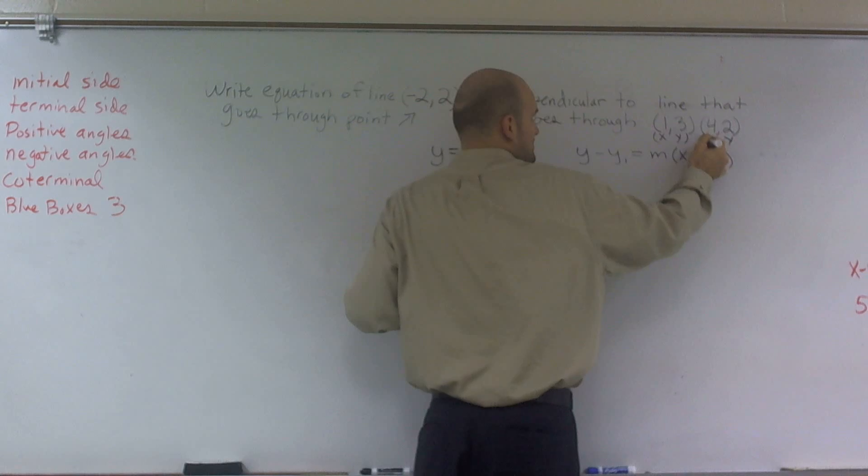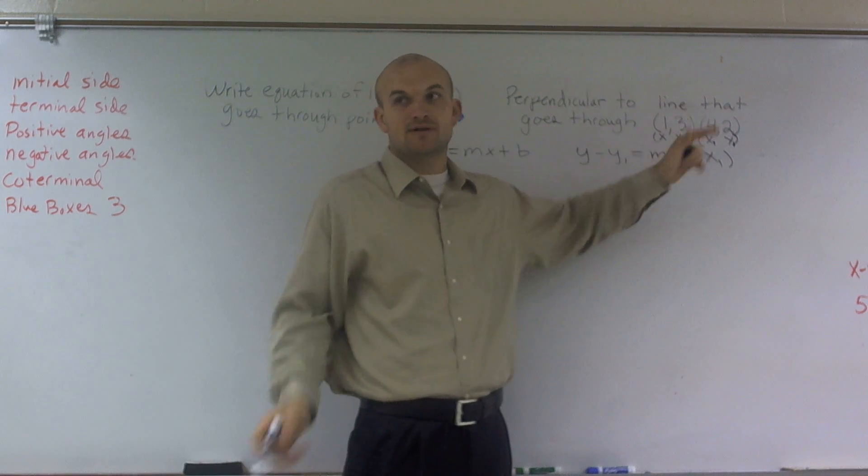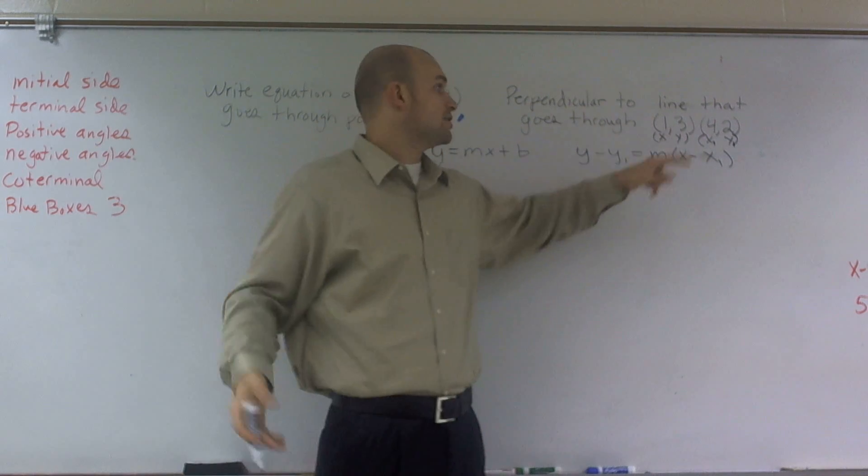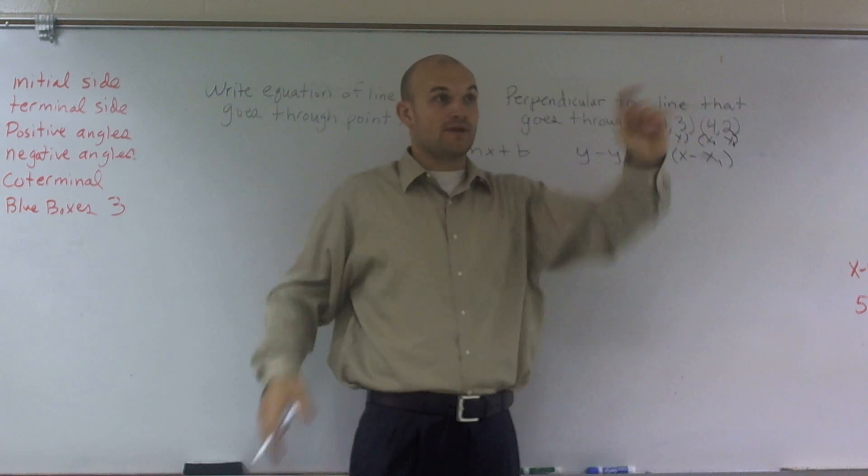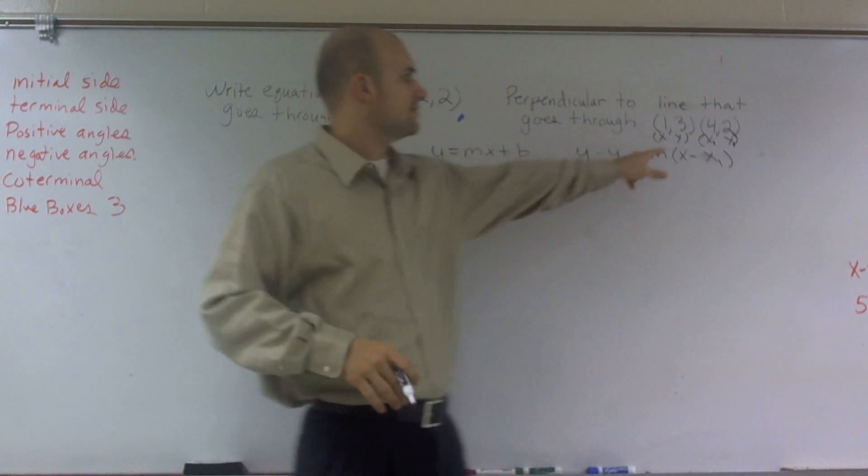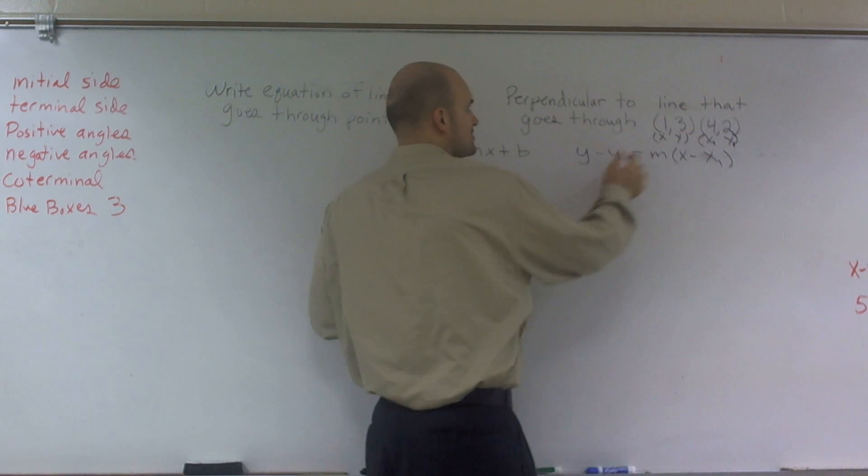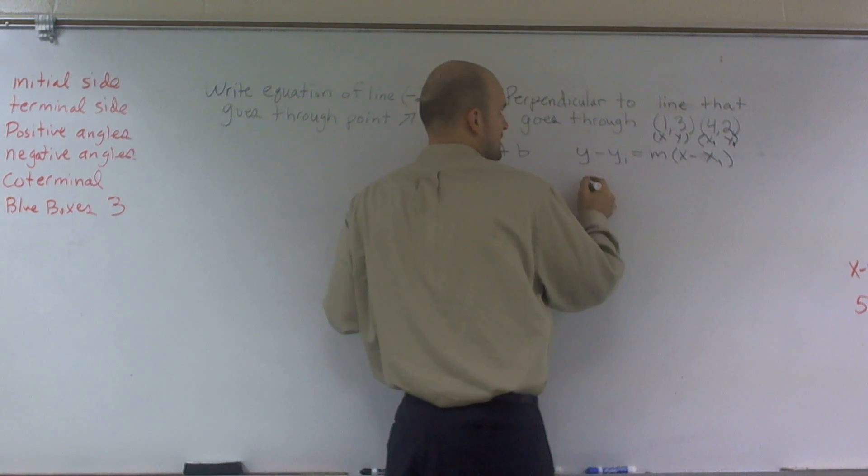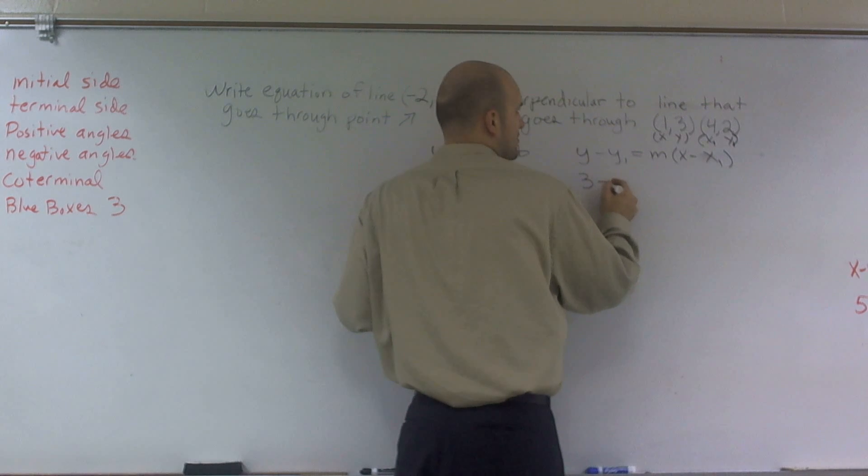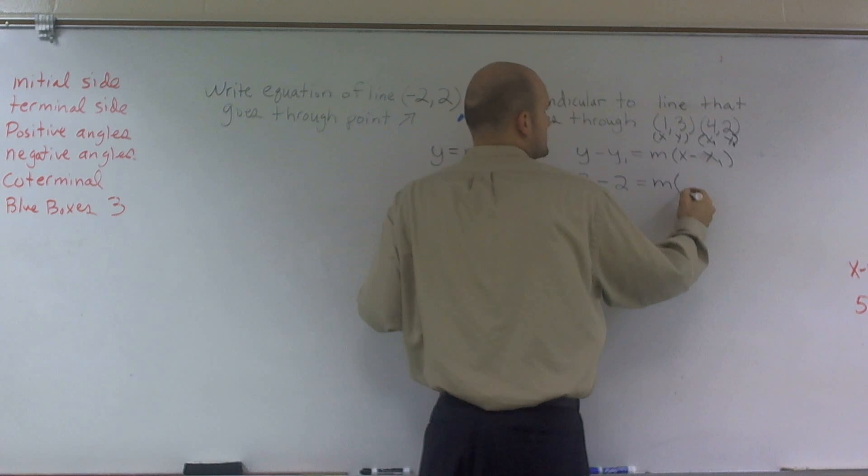But to distinguish between the two, I'm going to give these little subscripts 1. So that's going to help me distinguish between which x's I'm talking about. Because if I say, what's x? You might say 1, and you might say it's 4. So I'm going to give this coordinate an x1 and y1. So now when I plug them in, I get 3 minus 2 equals m times 1 minus 4.